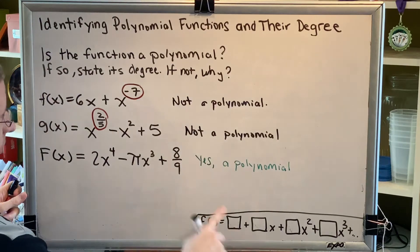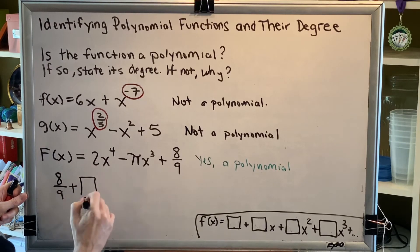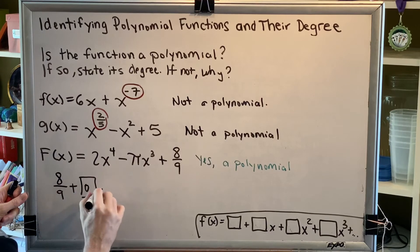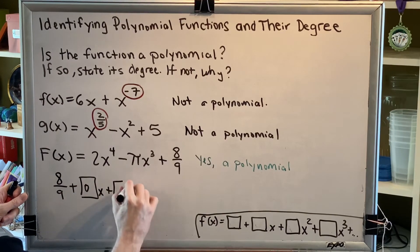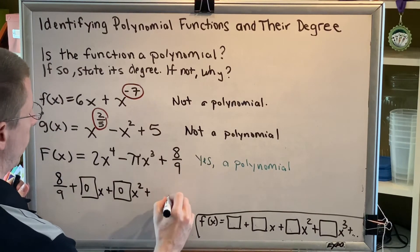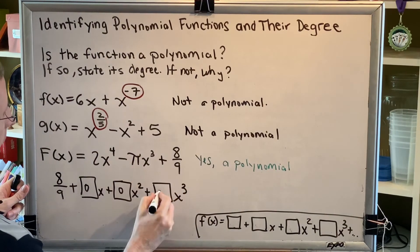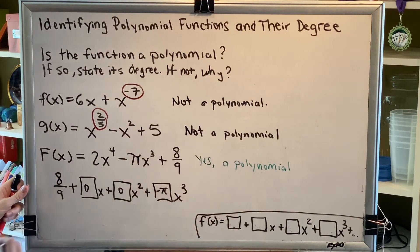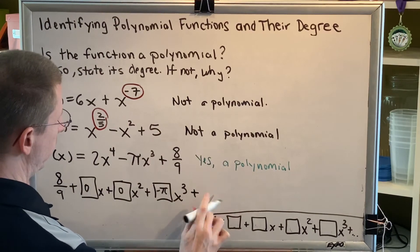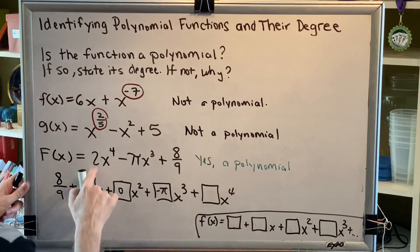First, our constant term, which is 8 ninths. 8 ninths is a real number. There are no terms where the exponent on x is 1, so I have 0x. There are no terms where the exponent on x is 2, so I have 0x squared. For the x cubed, the coefficient is negative pi. Pi is a real number, therefore negative pi is also a real number. And for my x to the fourth, my coefficient is 2.